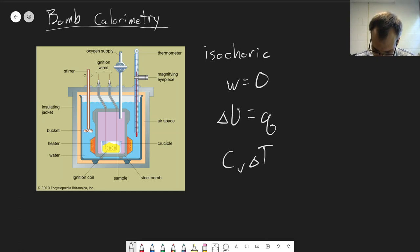To do this, we have this bomb calorimeter. This is the bomb here, made out of steel with a constant volume. This is what allows this to be a constant volume process.